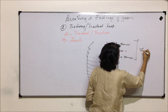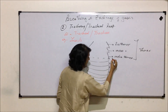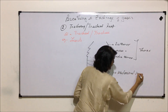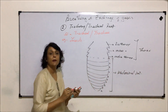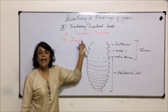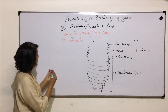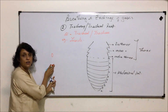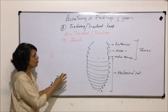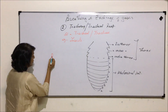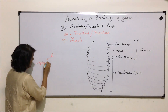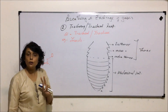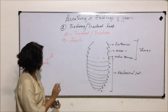This is the thorax part and this is the abdominal part. Now these tubes have an opening. The opening is known as a spiracle. There are ten spiracles in total — two in the thoracic region and eight in the abdominal region.